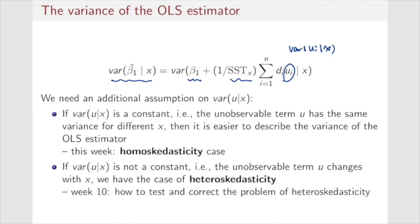There are two cases regarding the assumption on the conditional variance of the error term. The first is the homoskedasticity case, where the conditional variance is a constant — the unobservable term u has the same variance for different x. The second is the heteroskedasticity case, where the conditional variance is not a constant and the error term u changes with x. In this week, we will focus on the homoskedasticity case. In week 10, we will learn how to test and correct the problem of heteroskedasticity.